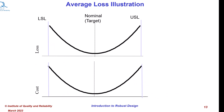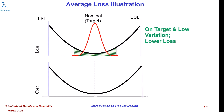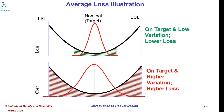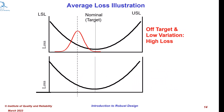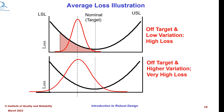Let us visualize average loss in various situations. When the mean is on target and the variation is low, the loss is also low, shown in green. When the mean is on target but variation increases, the loss also increases, shown in red. When the mean is off target and variation is low, the loss will still be somewhat higher. And finally, when the mean is off target and variation is also high, the loss will be very high.